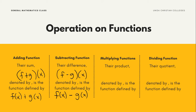Next, in multiplying functions, their product, denoted by (f·g)(x), is the function defined by f(x) times g(x).